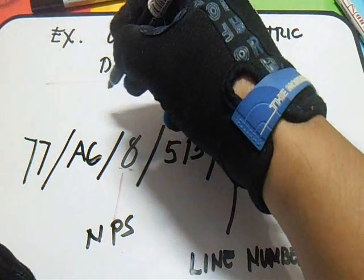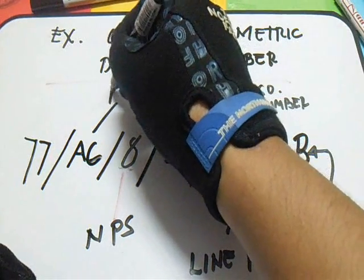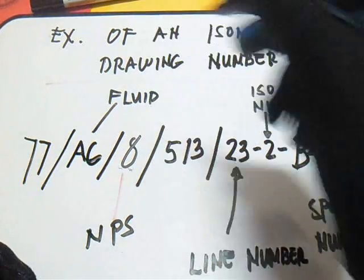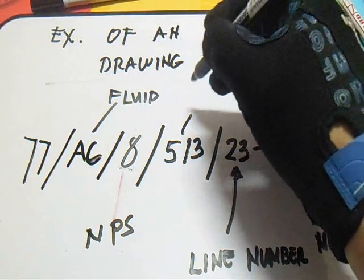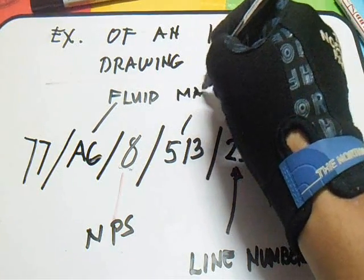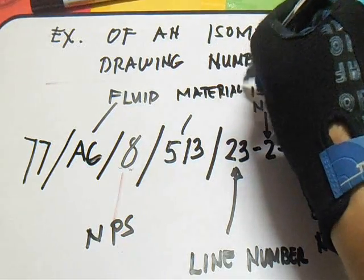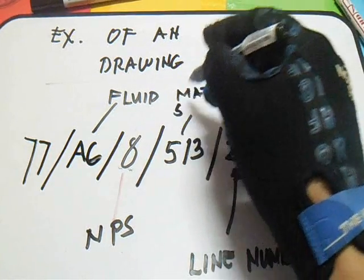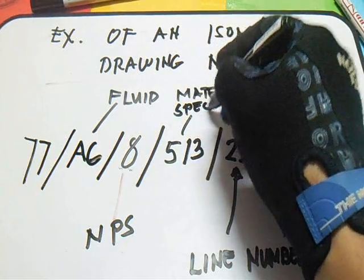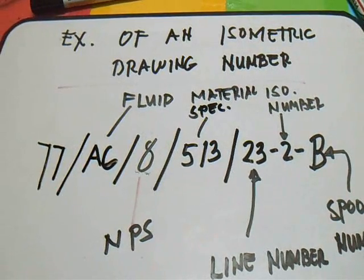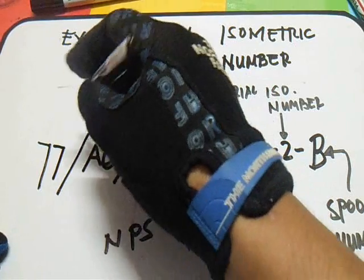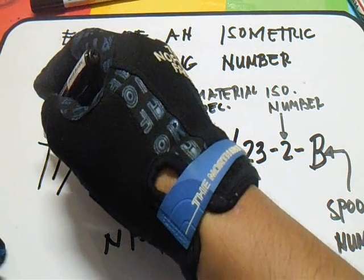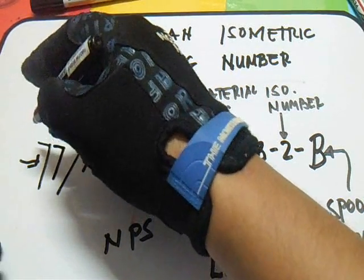What is AG? AG is the fluid. And what is this 513? This 513 is the material specification. And the last one — what is this 77? This 77 is our plant area.